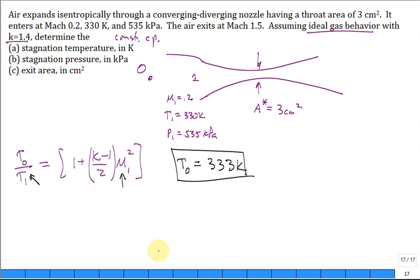What about the stagnation pressure? P naught over P, where I evaluated at one, is equal to 1 plus k minus 1 divided by 2 times M1 squared. Hey, that equation is exactly the same. Oops. Raised to the power of k over k minus 1. P naught is higher or lower than 535 kilopascal. Which one? Higher. So it's 550 kilopascal.